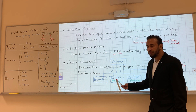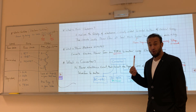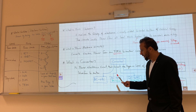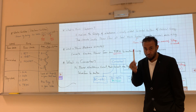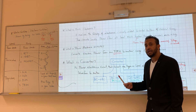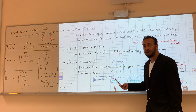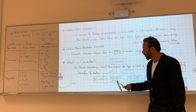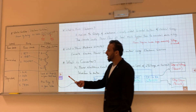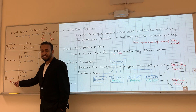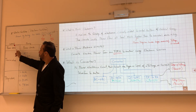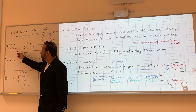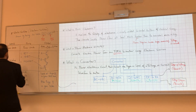Then we will work with controlled rectifiers: single-phase half-wave controlled, single-phase full-wave controlled, three-phase half-wave controlled, and three-phase full-wave controlled. For controlled converters, we will be using thyristors. Power diodes and thyristors are the same except that the power diode is uncontrolled and the thyristor is controlled.